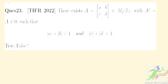Hello students, welcome to classes. In this video we are solving the papers of TIFR Mathematics 2022. Question number 23 says: does there exist a 2×2 matrix with entries a, b, c, d in M₂(ℝ) such that A² = A, A ≠ 0, with |a| + |b| < 1 and |c| + |d| < 1? We need to determine whether this statement is true or false.